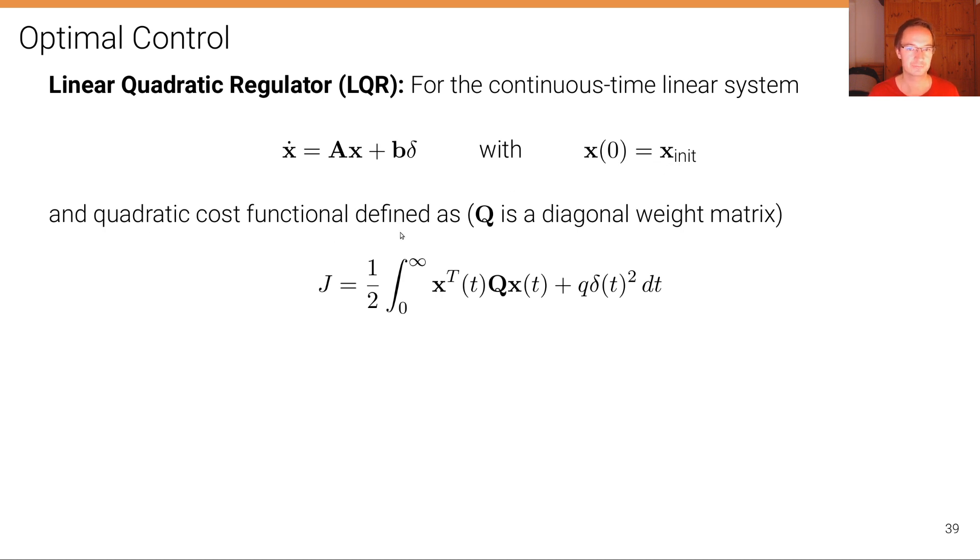And a quadratic cost functional defined as J equals one-half times the integral over time into the future—in this case infinitely into the future—where we define a cost term. Q is a diagonal weight matrix that assigns a cost to particular states.